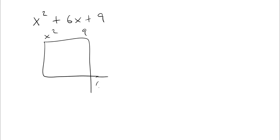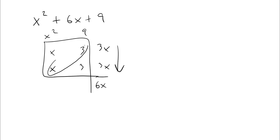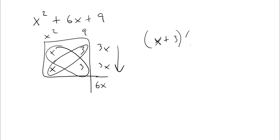You have a 9 and a 6x, and this is x and x. What multiplies to give you 9? 3 and 3, and that's positive, so we're good. So you've got 3x here and 3x. Adding down is 6x. So my answer to this problem is x plus 3 times x plus 3.